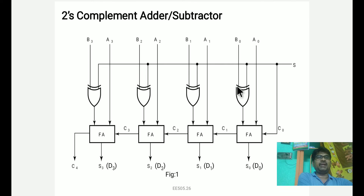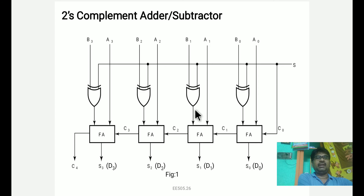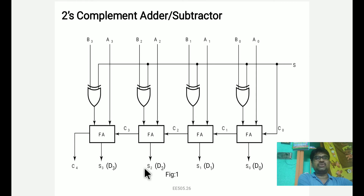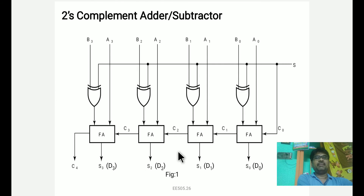A0 and B0 — addition: sum S0 and carry C1 are produced. Next, A1, B1 plus carry C1 give sum S1 and carry C2. Next, A2, B2 plus C2 give sum S2 and carry C3. Next, A3, B3 plus C3 give sum S3 and carry C4. With S equal to 0, addition is performed.